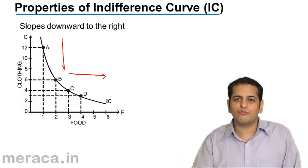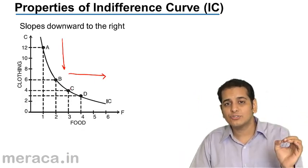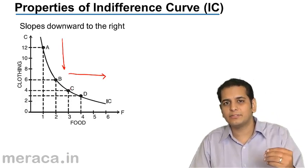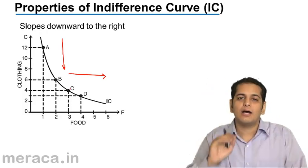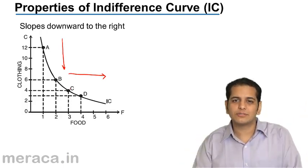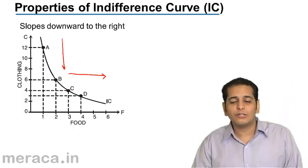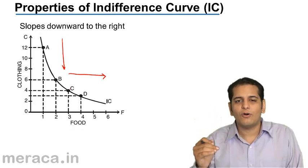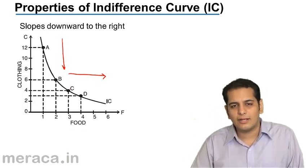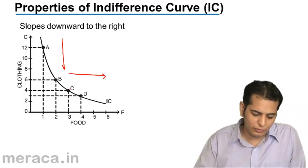If I increase the consumption of both commodities, my satisfaction level has to certainly go up, and when this happens I will shift to some other indifference curve. So if I have to be on the same indifference curve, the consumption of one good will lead to a reduction in the consumption of the other good, and thus it is always downward sloping from left to right.